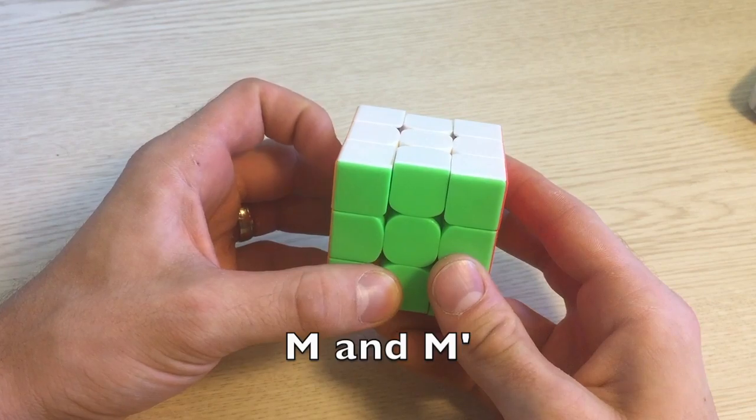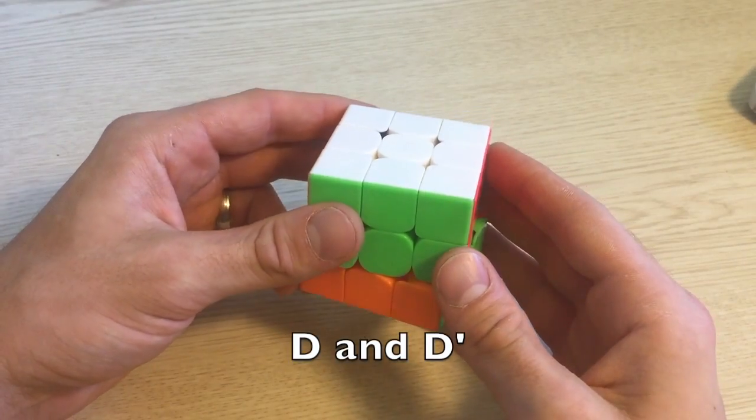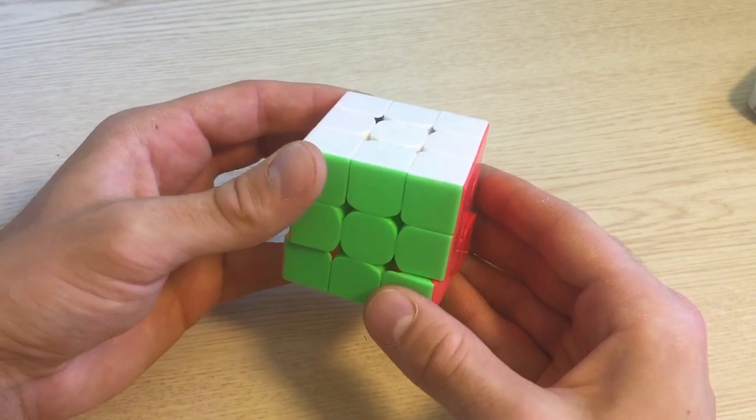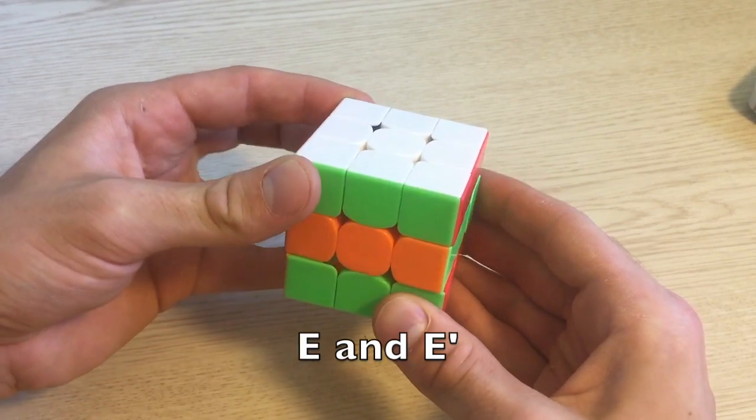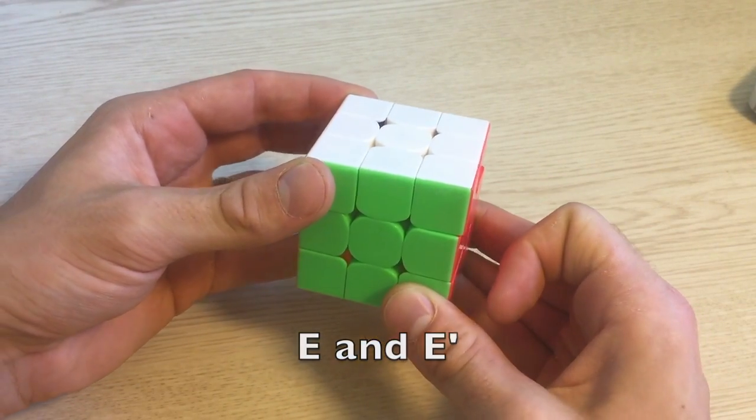E you can think of as an equator, it moves the same way as the D face does, and D and D', E and E'.